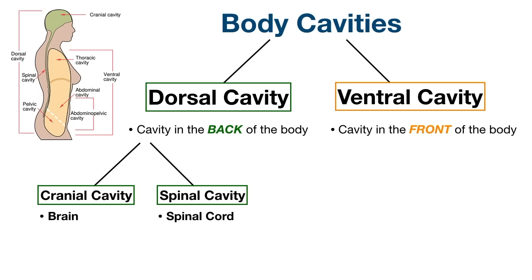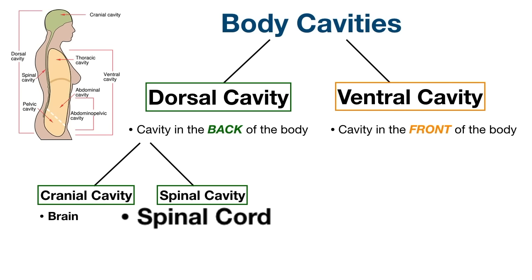Going back to our flow chart, we now know the cranial cavity and spinal cavity make up the dorsal cavity. The cranial cavity contains the brain and the spinal cavity contains the spinal cord. In other words, the dorsal cavity houses the central nervous system, which is made up of the brain and spinal cord. Now let's move on to the ventral cavity.